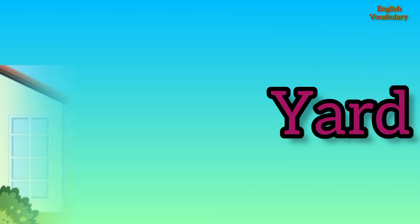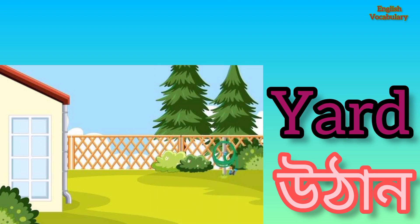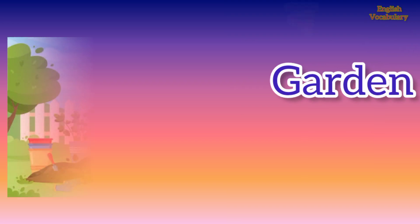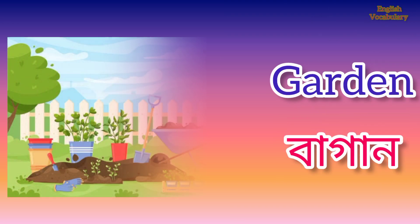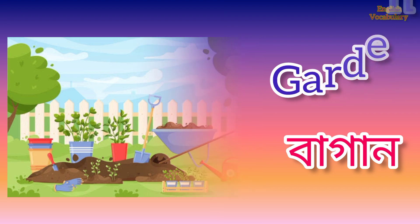Yard. Y-A-R-D. Yard means uthan. Garden. G-A-R-D-E-N. Garden means bagan.